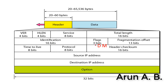In the flag bits we have three bits: the first one is zero, the second one is the Don't Fragment bit, and M stands for More Fragments. We have discussed these concepts in the previous class. One more field is the Fragment Offset, which is 13 bits.